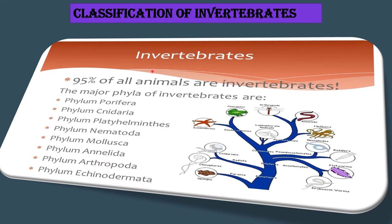Invertebrates can be found on land and in water bodies such as ponds, rivers, streams and oceans. They are further subdivided into 8 major phyla: Porifera, Cnidaria, Platyhelminthes, Nematoda, Mollusca, Annelida, Arthropoda and Echinodermata. Invertebrates account for about 95% of all animal kingdom, and amongst these, the insects alone account for a million species.